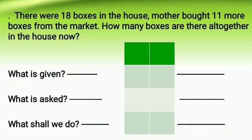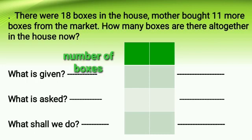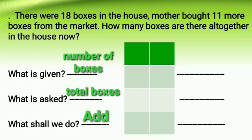Let us now read our third story. There were 18 boxes in the house. Mother bought 11 more boxes from the market. How many boxes are there altogether in the house now? Children, what information is given to us? About the boxes. What is asked? Total boxes. What shall we do? Addition.